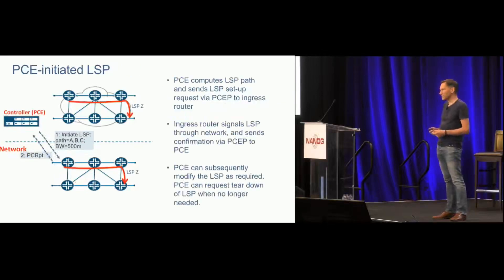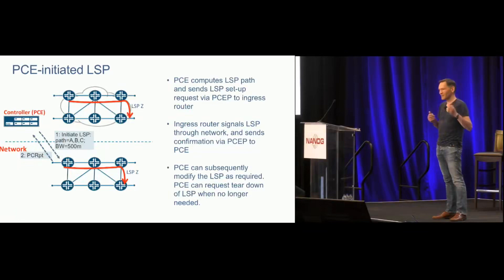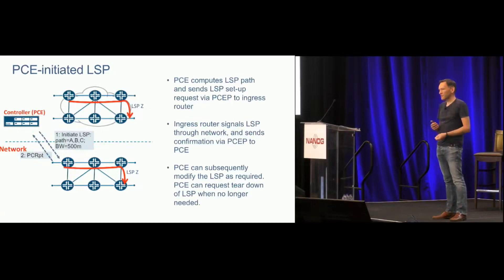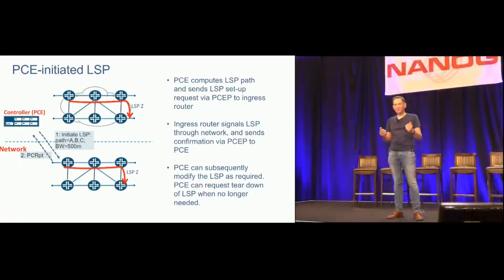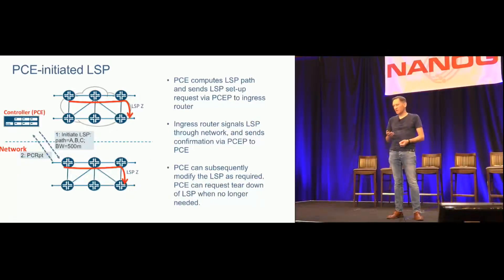The final type is PCE-initiated — an LSP actually created by the controller from scratch. The first thing the ingress router knows is receiving a PCEP initiate message from the controller saying 'set up this new LSP; this is the name, this is the precise ERO to follow, bandwidth reservation if it's RSVP, and a flag for whether to instantiate using segment routing or RSVP.' The ingress router instantiates it and sends a PCEP report message back confirming the LSP is up and running per the stipulated requirements. That way, the controller knows what it asked for actually exists in the network. That's PCEP in a nutshell.